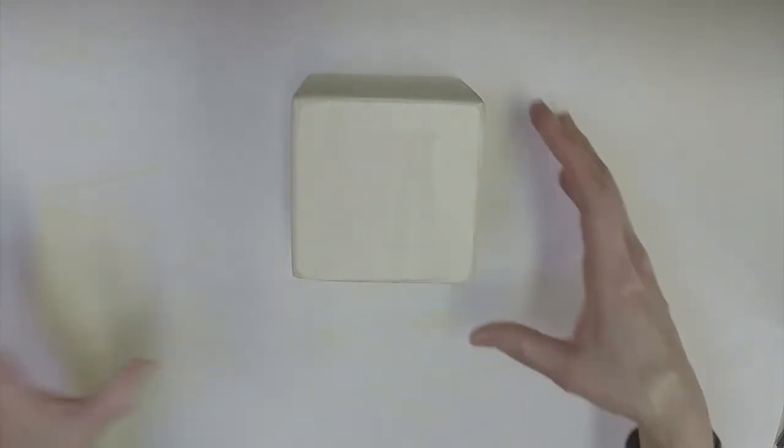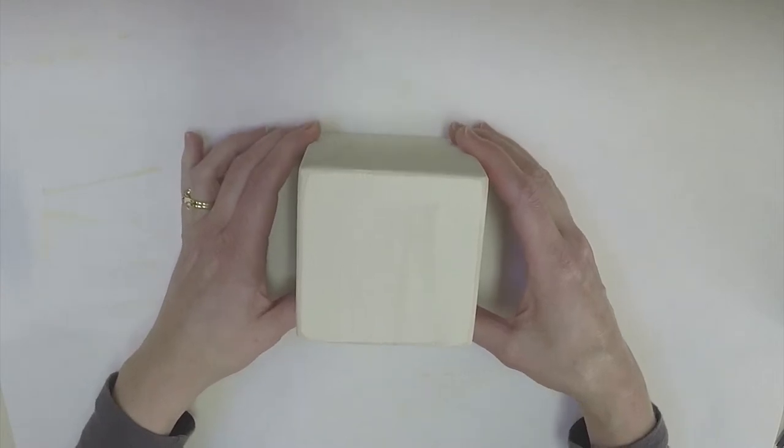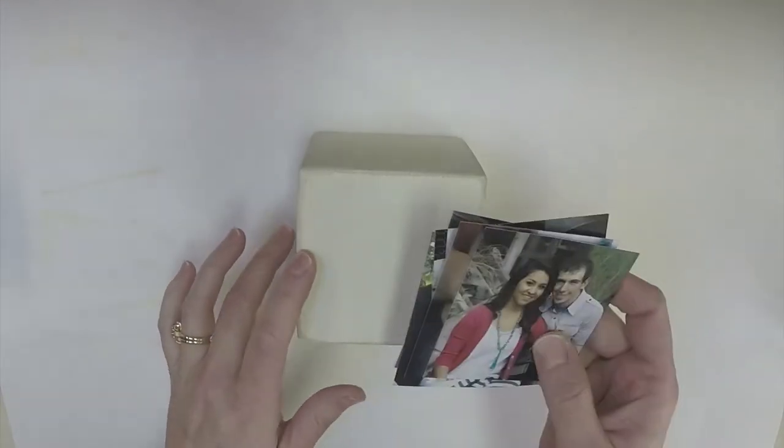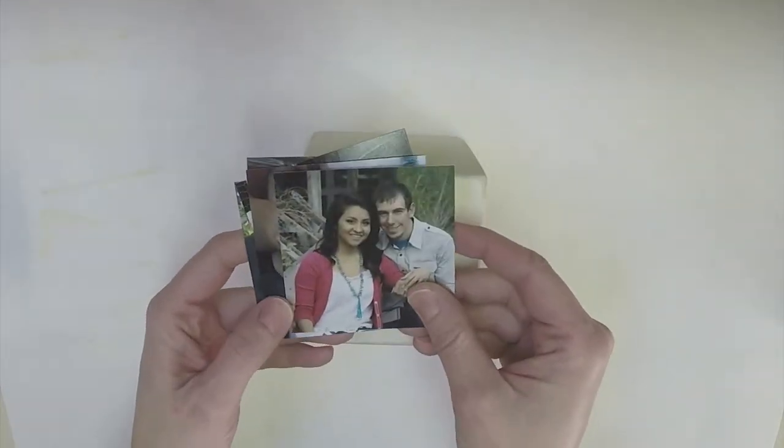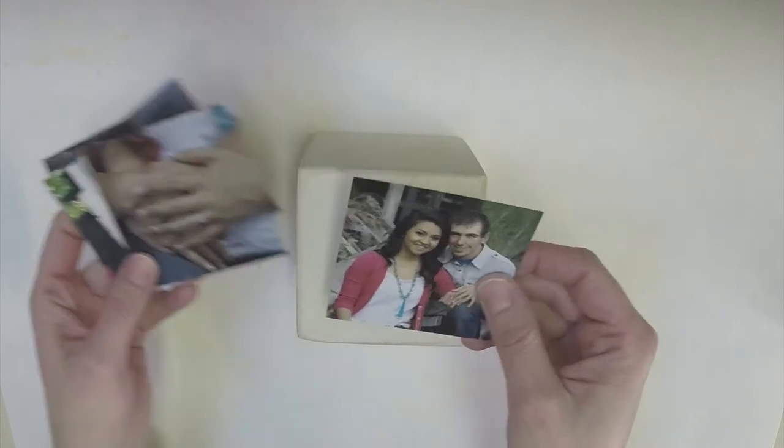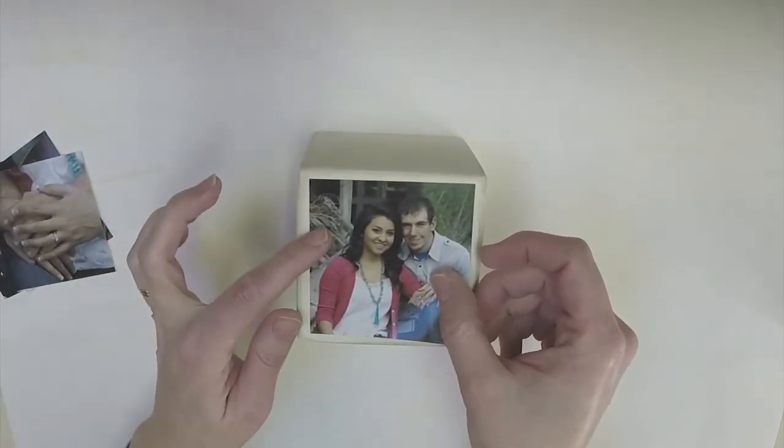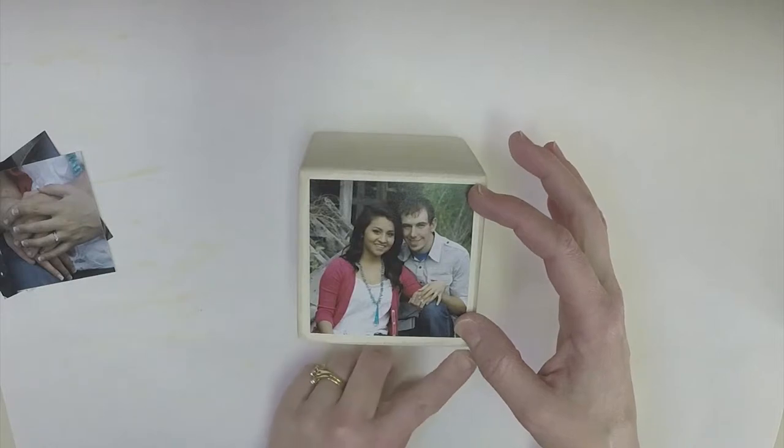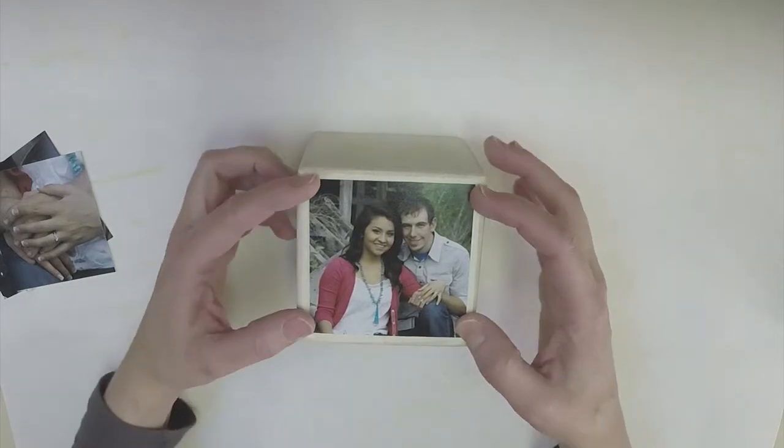Okay the next thing that we are going to be doing is attaching our photos. Now the blocks are three and a half inches square so I have made my photos three inches square so that when they're laid on the block you can see a bit of a border showing as well as a distressed edge.